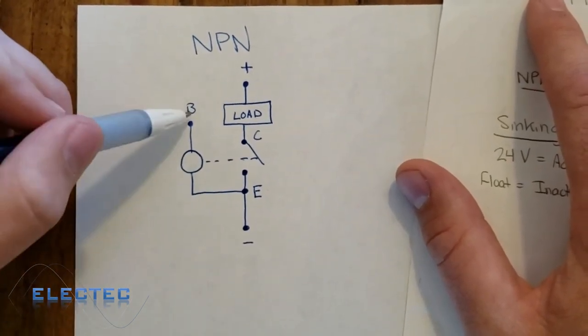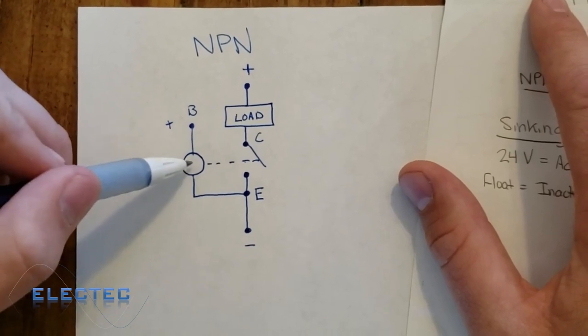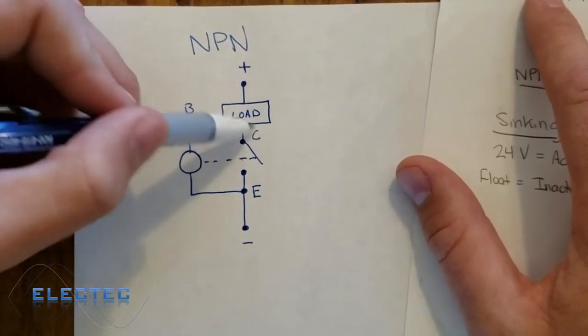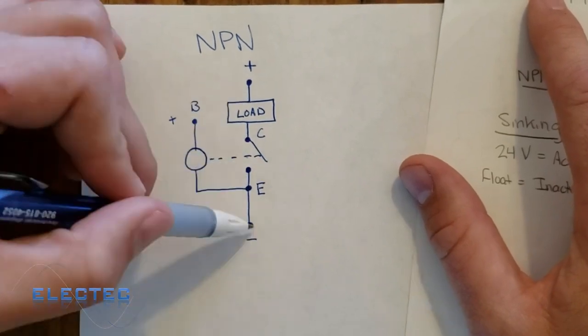If I don't source the base, well then the relay doesn't pull in, the switch stays pulled out, and the load turns off because it's not a circuit right here.